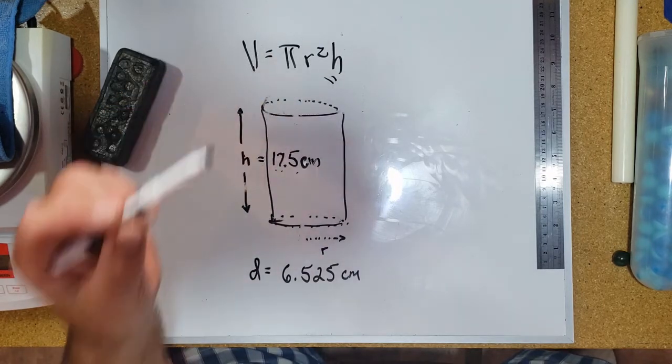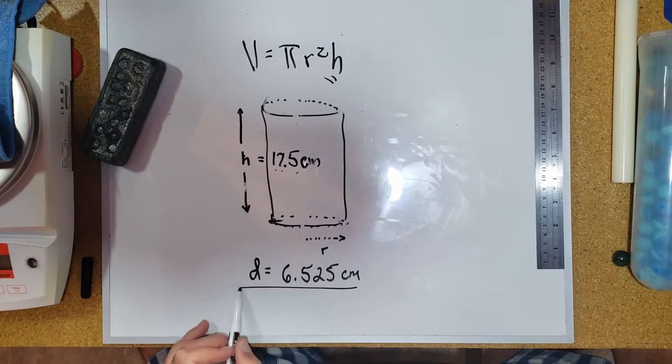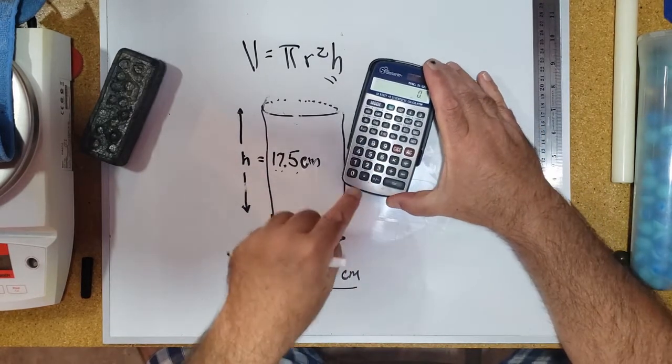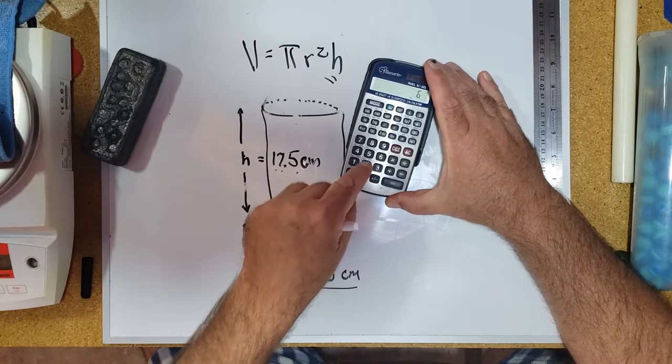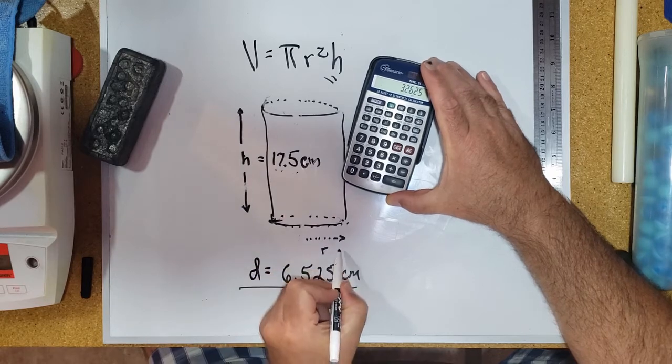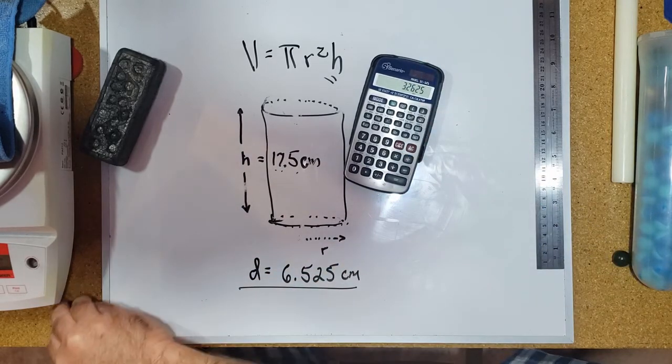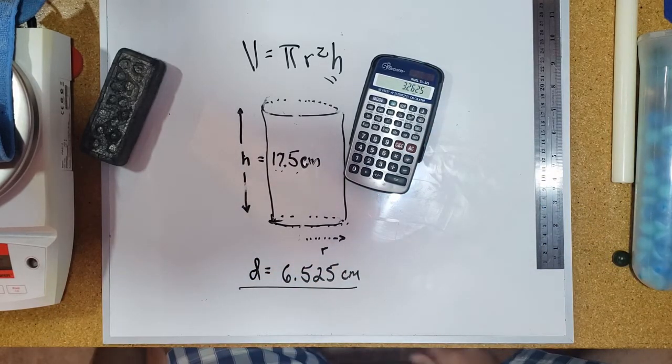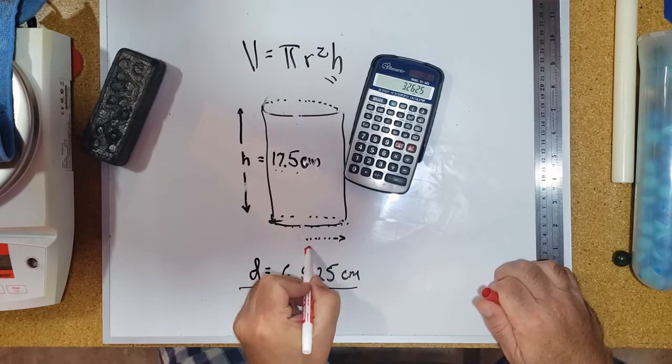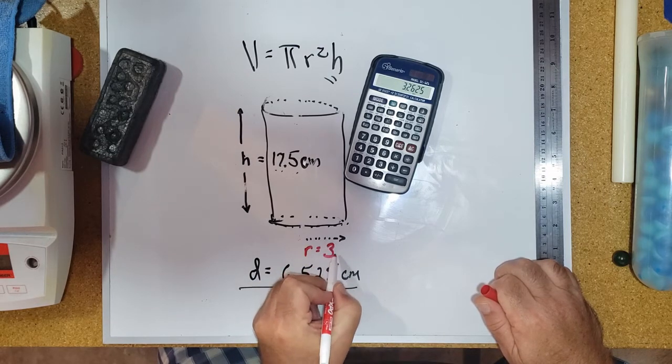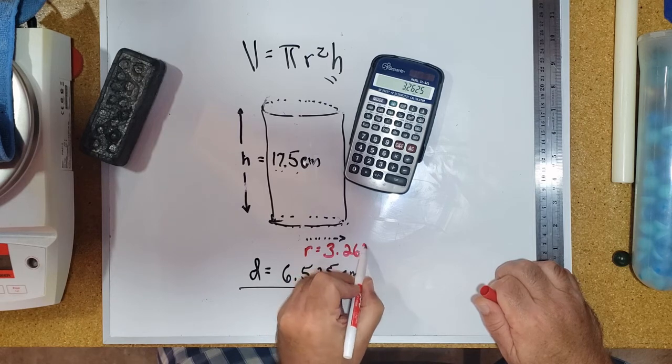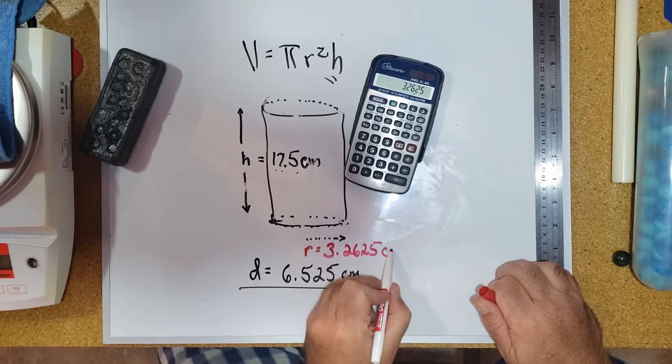But anyway, let's go ahead and finish up doing this calculation. I could plug h directly into this, but I cannot plug diameter in. I need to cut that in half real quick. So let me get my calculator at 6.525 and divide that in half. So I'm going to get r is equal to 3.2625 centimeters.